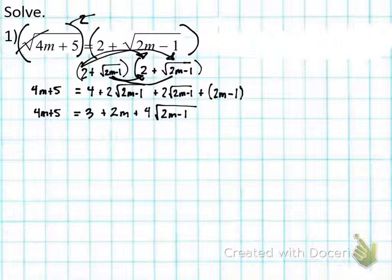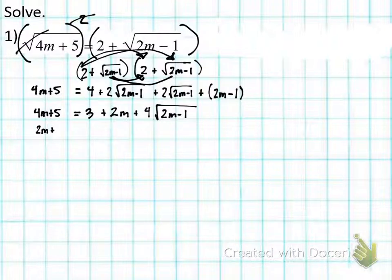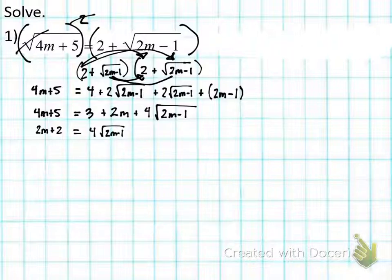Now I want to isolate the second square root with its coefficient. I have 3 + 2m on the right side, so I'll subtract 3 and subtract 2m from both sides. Four m minus 2m is 2m; five minus three is positive two. So I get: 2m + 2 = 4√(2m−1). This is now isolated.